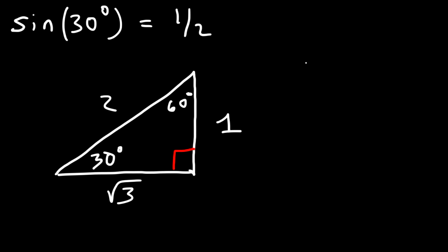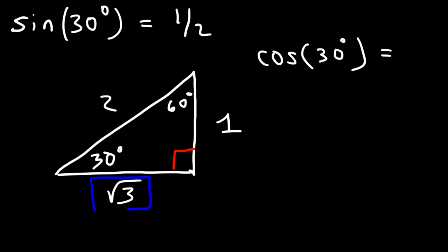To evaluate cosine of 30°, cosine = adjacent/hypotenuse. The adjacent side is √3 and the hypotenuse is 2, so cosine 30° = √3/2. This is how you find exact values for angles like 30° and 60°.